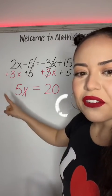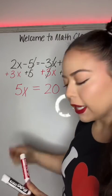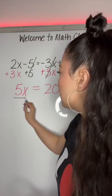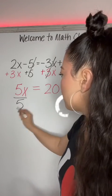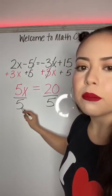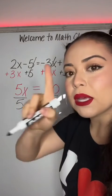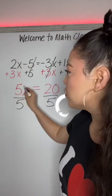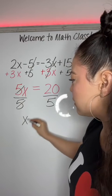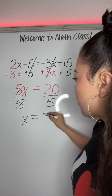The 5 and x are together by multiplication, so the inverse of multiplying is dividing. I'll show you why we divide. What happens when we do 5 divided by 5? You see how they cancel and they make 1? You're really just left with 1x, or x is equal to 20 divided by 5, which is 4.